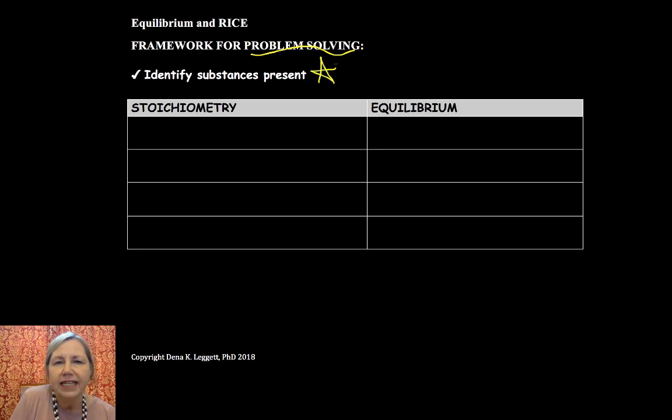Now, the first step is, believe it or not, one of the trickiest. You have to learn, and that takes practice, how to identify the substances that are present in a problem. If you're taking a standardized test at the end of the semester or the end of a year, problems are mixed up. You don't know the math approach you need, so you have to be able to identify the substances.